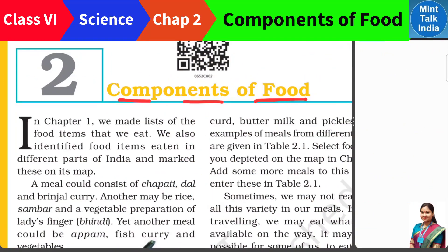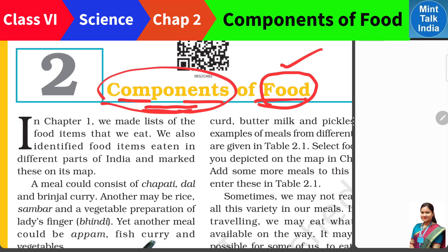So let us start. Sabse pehle, humare chapter ke naam ka meaning: we are studying 'food components.' Food is the food we eat for life and for living. Components are the things by which food is made up of. Some kids say food is made up of ingredients, as we studied in chapter 1.